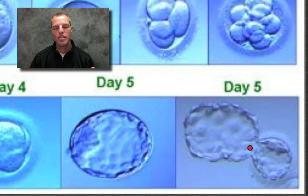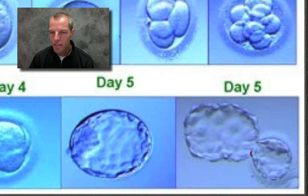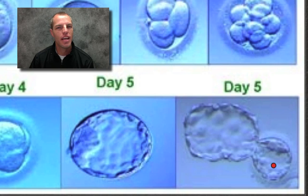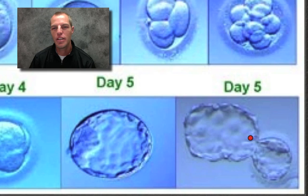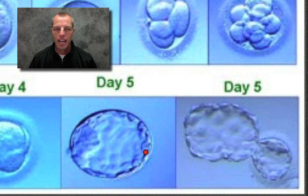Here's something you may not have known: we actually hatched from an egg. Our little embryo — the blastocyst — actually hatches from its egg to implant in the female's uterus, in the side wall of the uterus, to begin developing a connection with the mother.